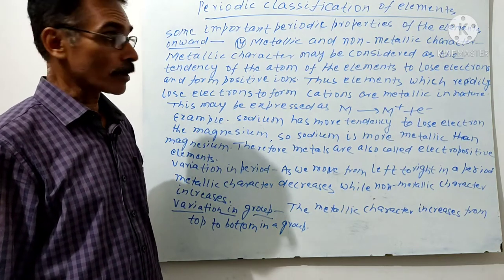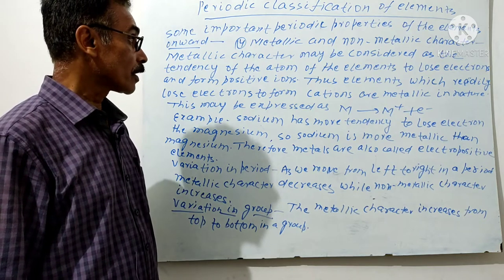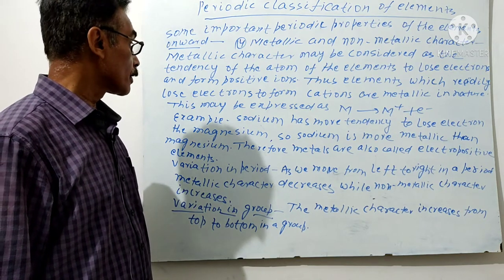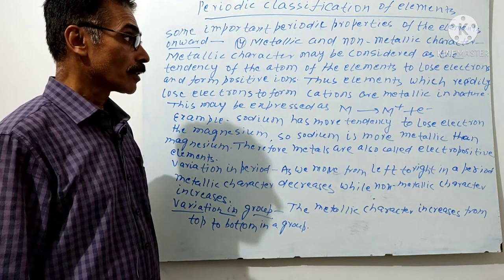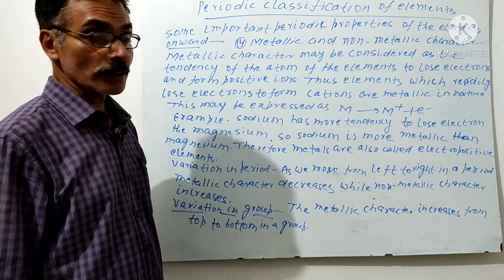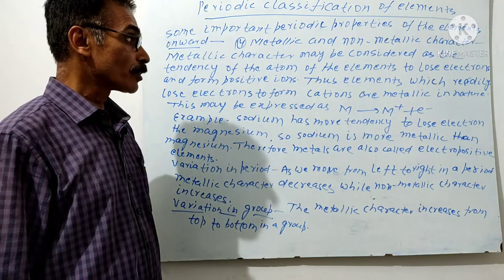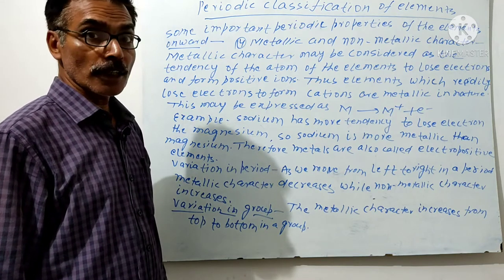Positive ions. Thus, elements which readily lose electrons to form cations are called metallic in nature. These are elements which can easily lose electrons.